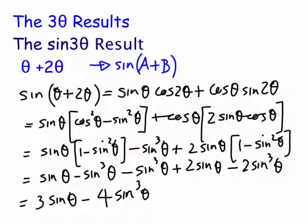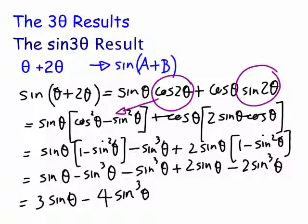Here we have the sin(3θ) results. The technique is fairly simple — you split the 3θ up into θ plus 2θ, then use the sin(a + b) result with a being θ and b being 2θ. Once you've got that, you're going to need the 2-theta results here and again here.